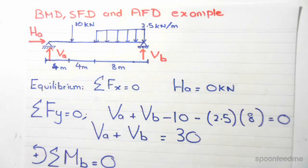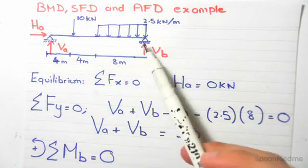So how do we work out VA and VB? We have to apply moments about a point in the structure and set this to equal zero. I chose point B, which is over here.